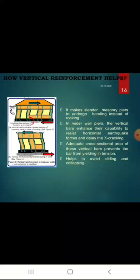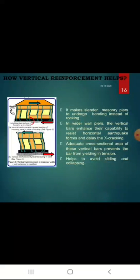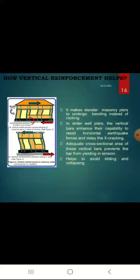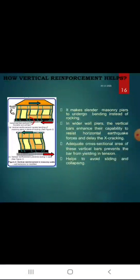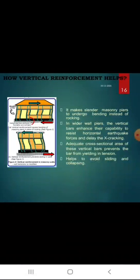Embedding vertical reinforcement bars at the edges of wall piers and anchoring them in the foundation at the bottom and in the roof band at the top forces slender masonry piers to undergo bending instead of rocking. The vertical bars enhance their capability to resist horizontal earthquake forces and delay X-type cracking. Further, vertical bars also help protect the wall from sliding and from collapsing in the weak direction.